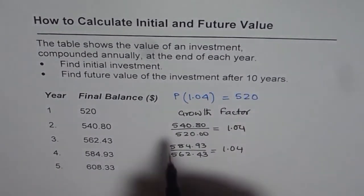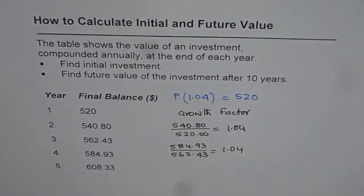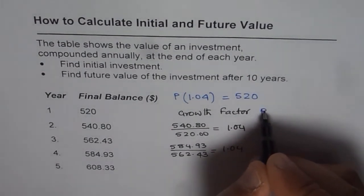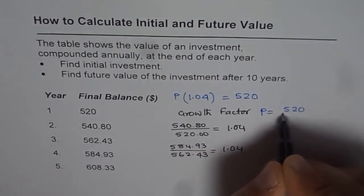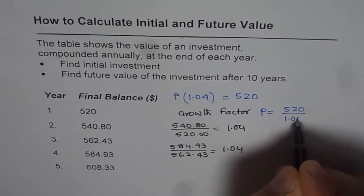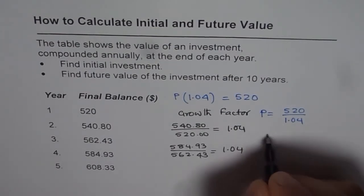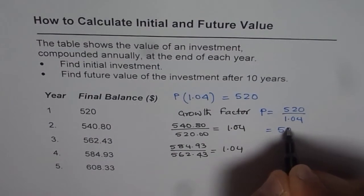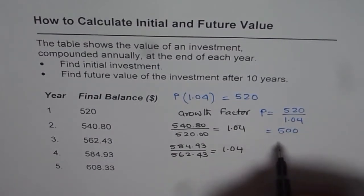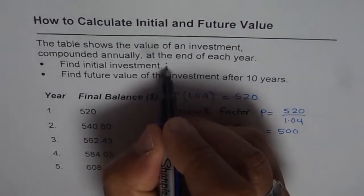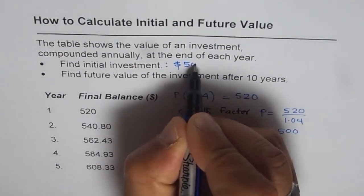So from here we can find what the value of P is. So we can say P is equal to 520.00 divided by 1.04. So let's do that. 520.00 divided by 1.04. It gives us $500.00. So that means the initial amount is $500.00. So we can write this answer which is $500.00.